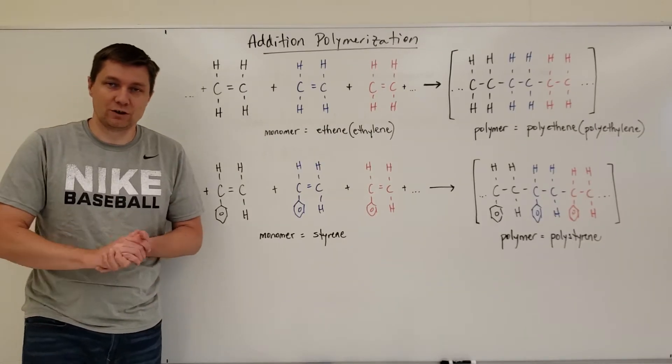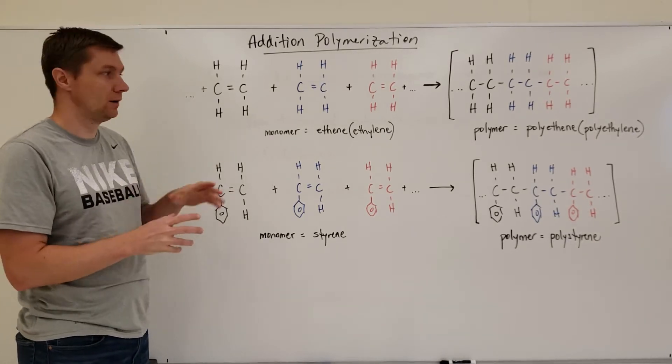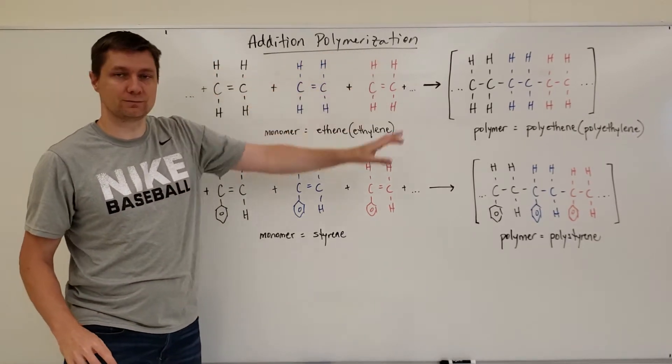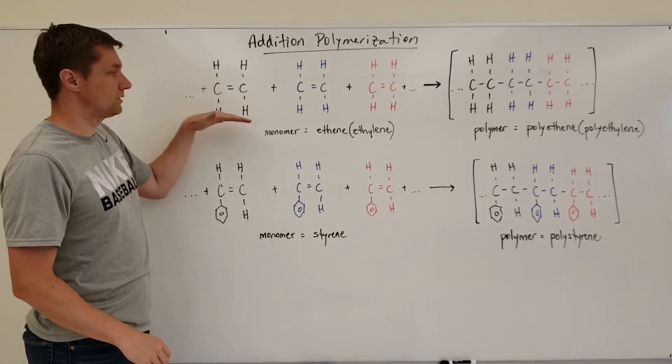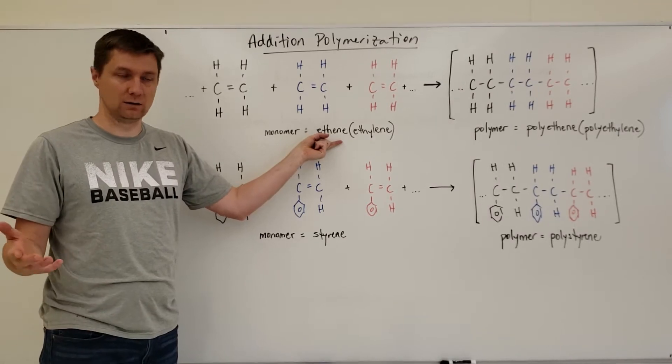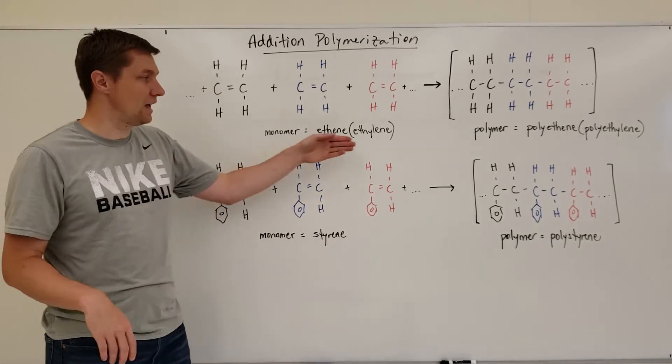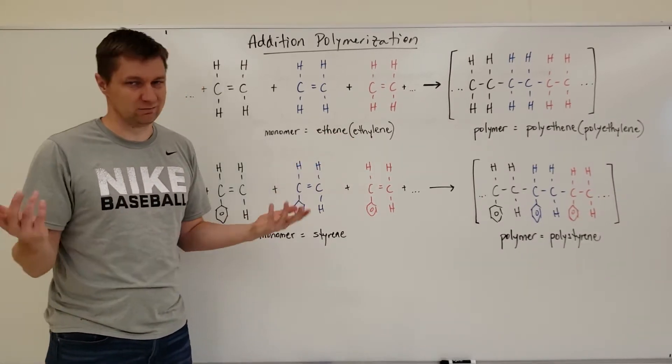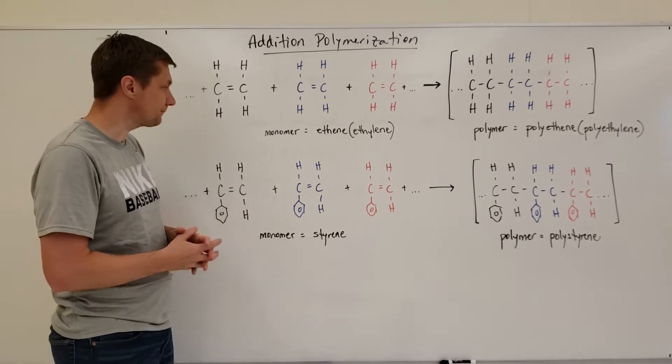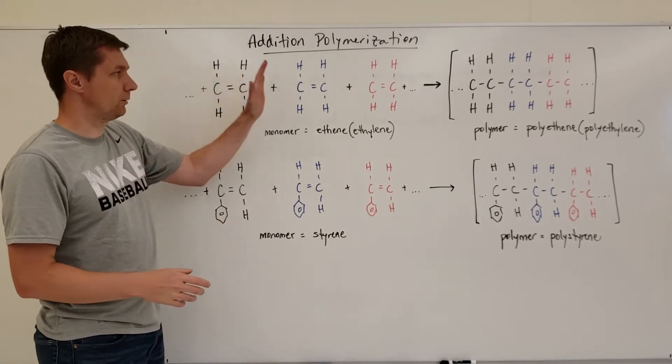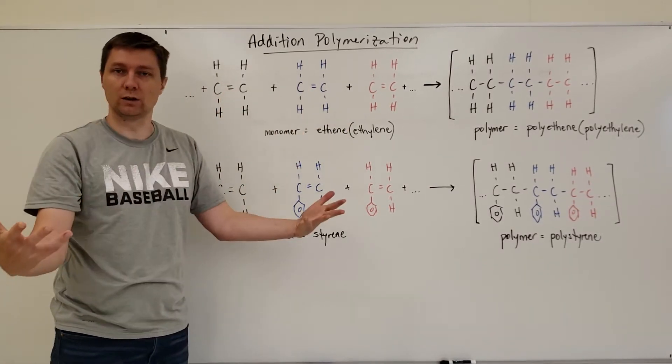So here's some examples of addition polymerization reactions. A couple of things I want to point out. These guys here are the monomers. In this first example, the monomer being used is just a molecule of ethene. You can see two carbons, four hydrogens, and a double bond in the middle. Sometimes ethene is referred to as ethylene. Now what an addition polymerization reaction is, is you take these monomers and you just add them together into one large molecule.